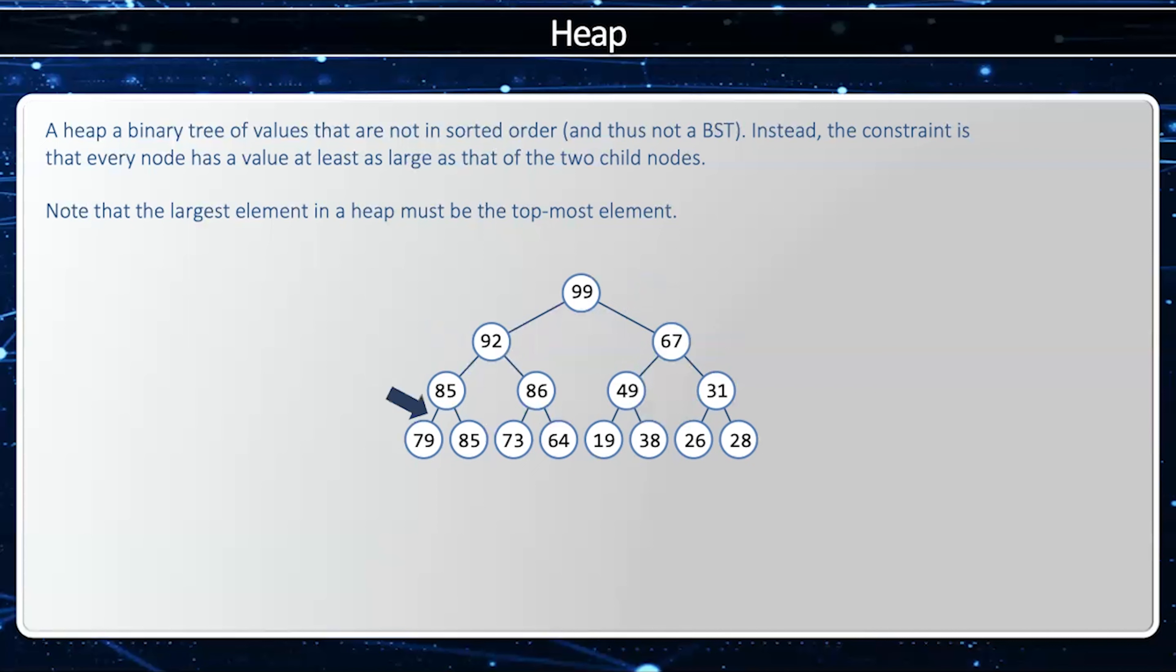85 and 79, greater than. 85 and 85, here they're equal. But the constraint is that the parent node is greater than or equal to the children nodes.